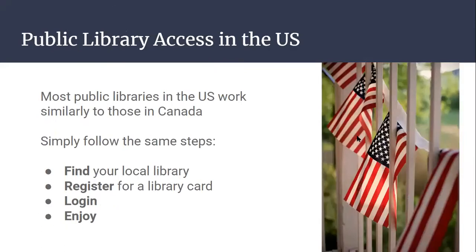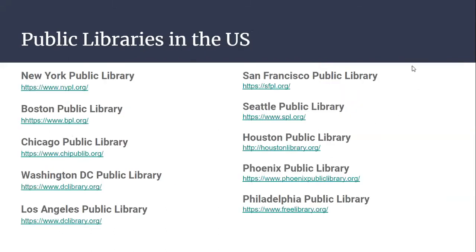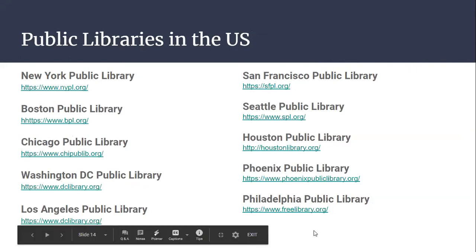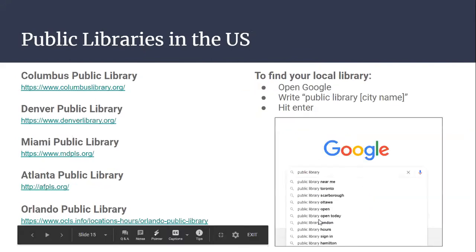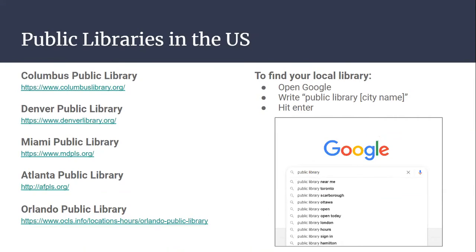We briefly touched on Canadian public libraries, but for public libraries in the US, it works pretty similarly — just follow the same steps. First, find your local library, then register for a library card, log in, and you should be able to enjoy their digital content. There's a list of major public libraries in the United States and their websites. If your city or town is not listed, don't worry — just go to Google and search for 'public library' and the name of your city or town, hit enter, and it should appear.